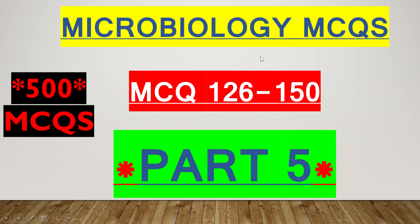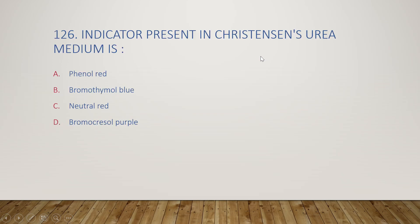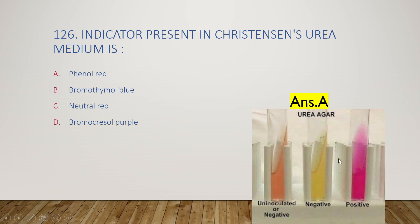The first question: the indicator present in Christensen's urea medium is phenol red, bromothymol blue, neutral red, or bromocresyl purple? The right answer is option A, phenol red. This is the urea test. Bacteria containing urease enzyme use this urea agar slant and give a positive result as a pink color of the phenol red indicator.